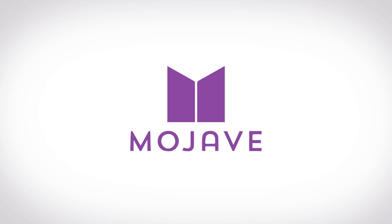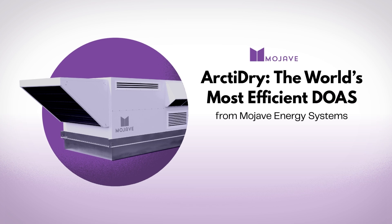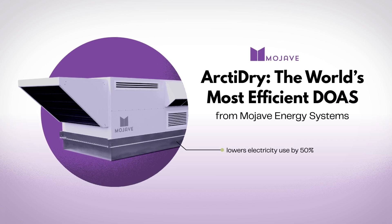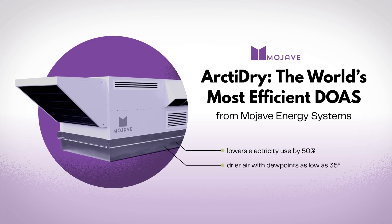Arc2Dry from Mojave is an innovative, dedicated outdoor air system, or DOAS, that lowers electricity use by 50% while also delivering drier air at dew points as low as 35 degrees.